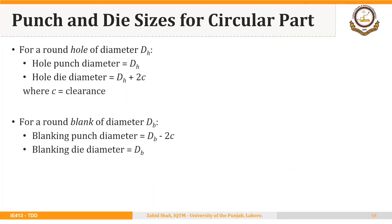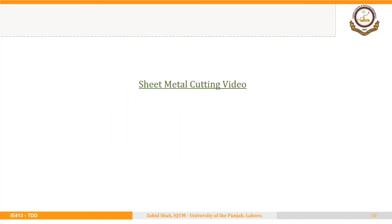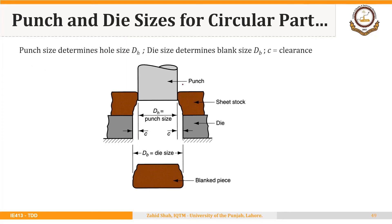At the bottom right we have the side view of the punch and die. If the blank is a circular part, then the hole punch diameter d_h determines the whole punch diameter. For a punching operation, we add clearance to determine the die diameter. For a round blank, the blank diameter determines the die diameter, and we subtract clearance to determine the punch diameter.